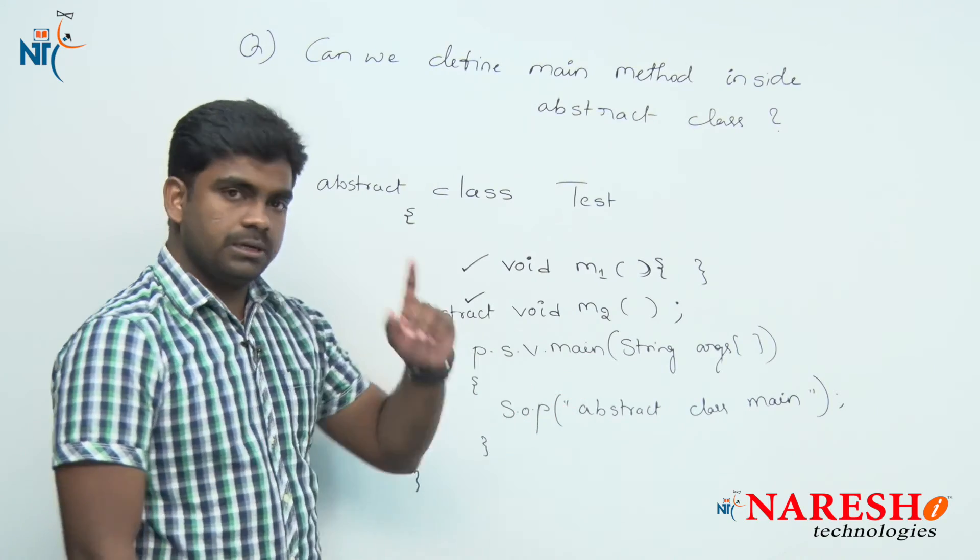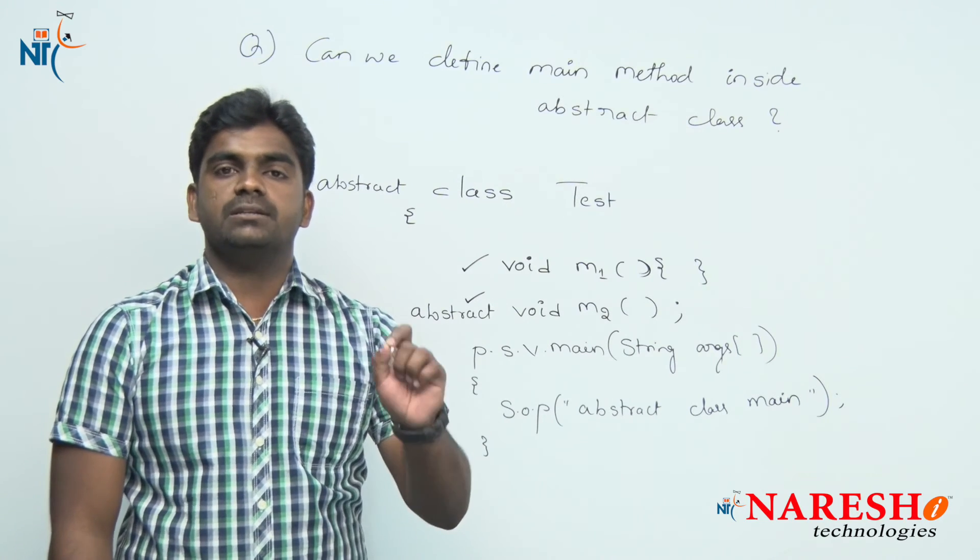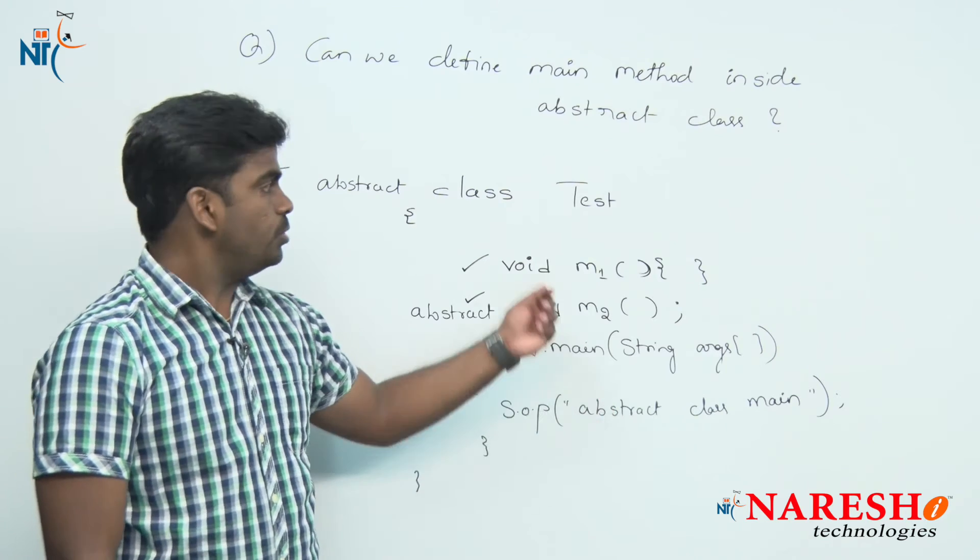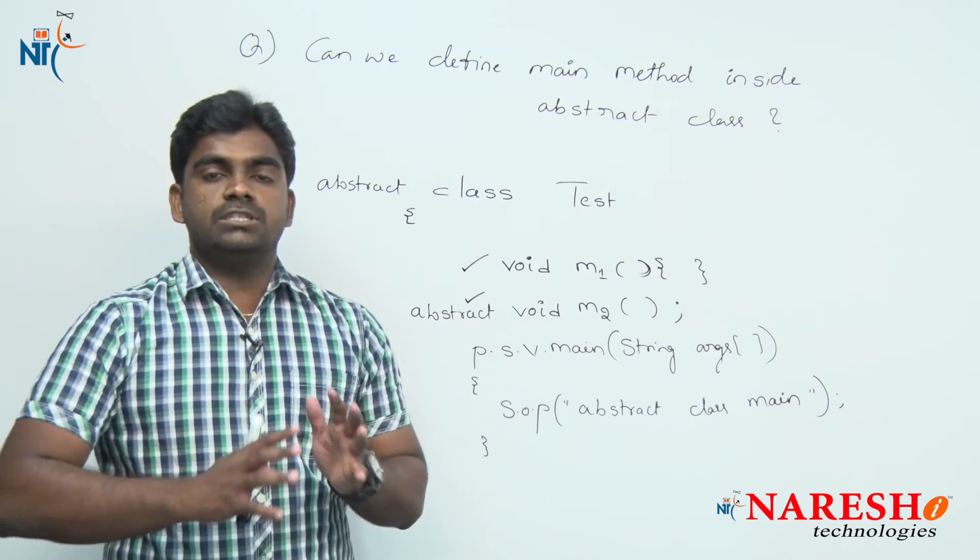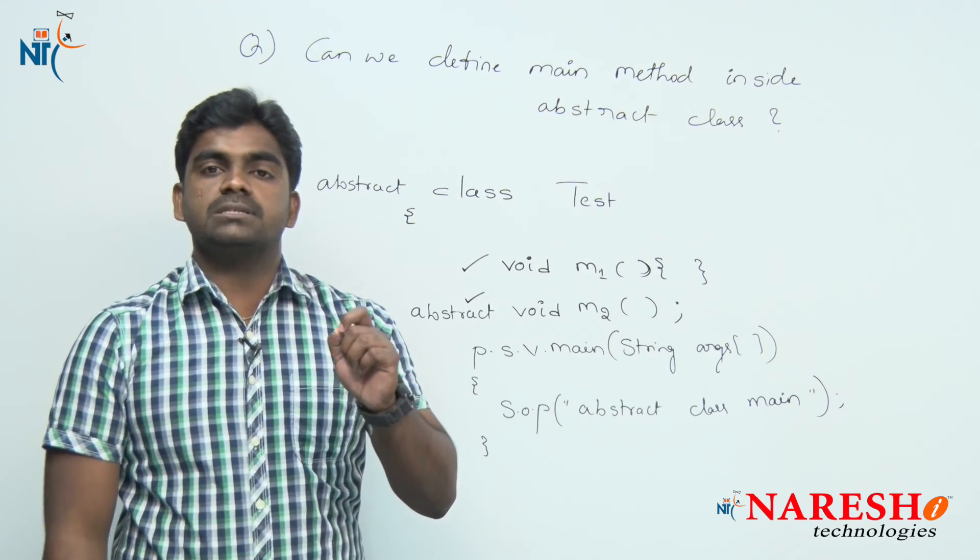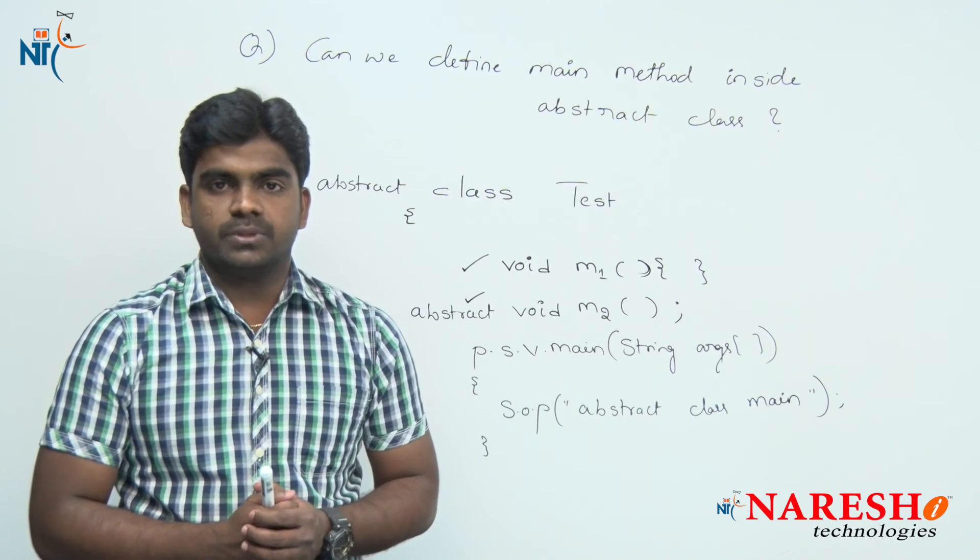Who will call main method? JVM calls the main method. JVM also no need to instantiate the class to access main method. Abstract class can have a main method, and JVM invokes the main method automatically because main method is a static method. Static functionality of abstract class we can access directly.